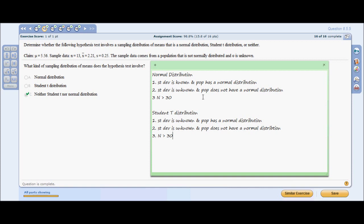For normal distribution, you can use that if the standard deviation is either known or unknown, and the population has a normal or not normal distribution, and n is greater than 30. Here, n is less than 30, and it says it's not normally distributed, so we can rule out the normal distribution.